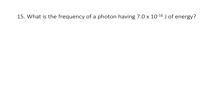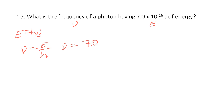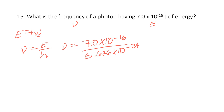What is the frequency of a photon having 7.0 × 10⁻¹⁶ joules of energy? Solving for frequency: ν = E/h. So frequency is 7.0 × 10⁻¹⁶ divided by 6.626 × 10⁻³⁴. In the calculator: 7 EE negative 16 divided by 6.626 EE negative 34. You get 1.06 × 10¹⁸ Hertz.